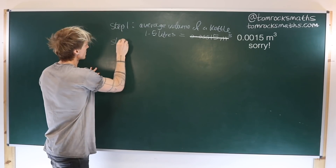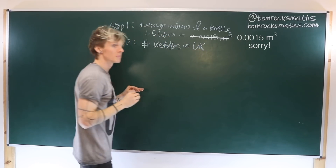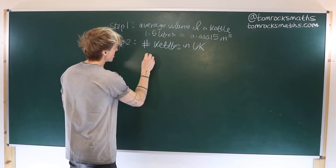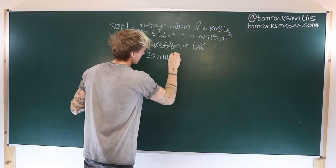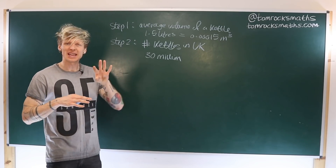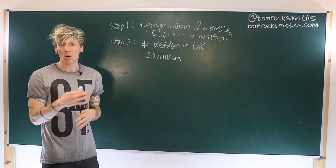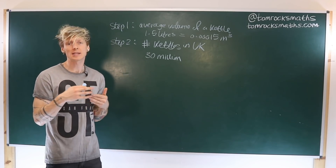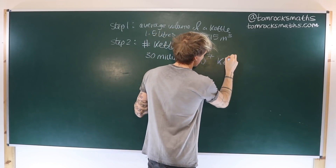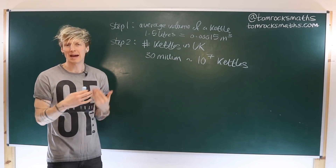Step two is going to be to estimate the number of kettles in the UK. One way to do this would be to assume that every household has a kettle — it's a pretty standard piece of kitchen equipment — so that would give us around 30 million. There will be other kettles outside households, maybe in a workplace, but it's already quite a strong assumption. So 30 million, or in terms of Fermi estimation where we're just interested in the order of magnitude, this is about 10 to the 7 kettles.